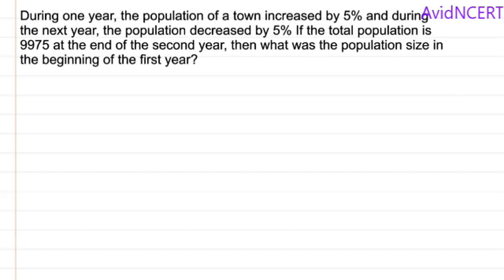During one year, the population of a town increased by 5% and during the next year, the population decreased by 5%. If the total population is 9975 at the end of the second year, then what was the population size in the beginning of the first year?